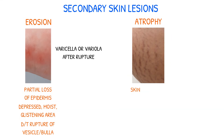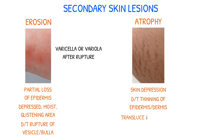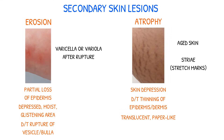Atrophy is a depression in the skin resulting from thinning of the epidermis or dermis. This results in the thinning of the skin surface and loss of skin markings, and the skin appears translucent and paper-like. Examples of atrophy include aged skin and striae, which are stretch marks.